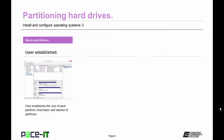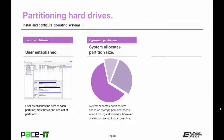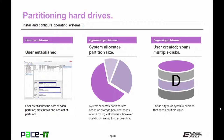There are three basic types of partitions. There's the basic partition — that's where the user establishes it, the user sets the size, and it is the most basic and easiest of partitions. Then there's the dynamic partition, where you allow the operating system to decide how much space is needed, and it can increase and decrease as needs arise and fall. Then there is the logical partition, where it spans multiple disks. This is a type of dynamic partition.